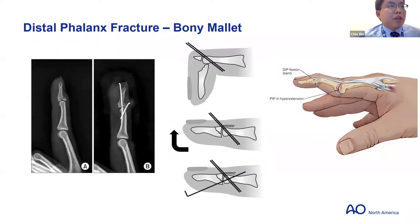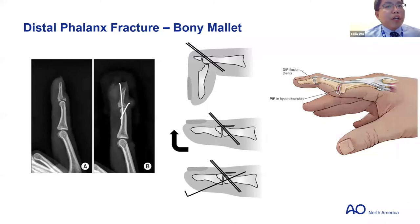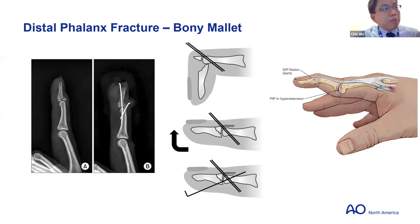If mallet injuries go untreated, they can develop swan neck deformity — a secondary deformity from attenuation of the volar plate and transverse retinacular ligament, leading to dorsal subluxation of the lateral bands, resulting in PIP hyperextension and DIP flexion. For bony mallet treatment, a common method is using a K-wire almost as a backstop to prevent the dorsal piece from displacing further, then lifting the finger into extension and pinning it to restore joint congruency.